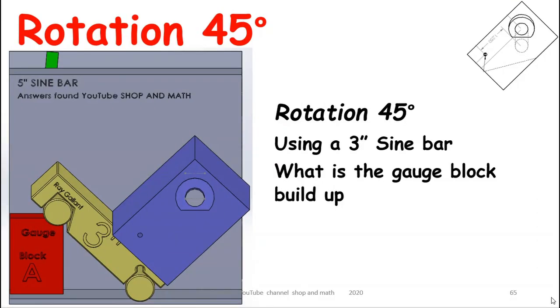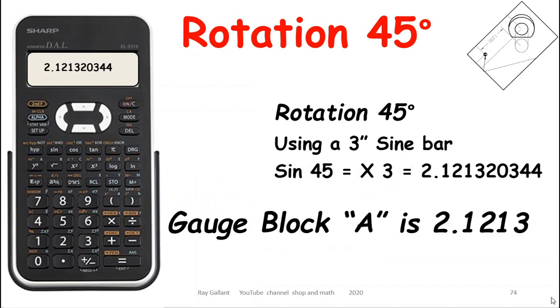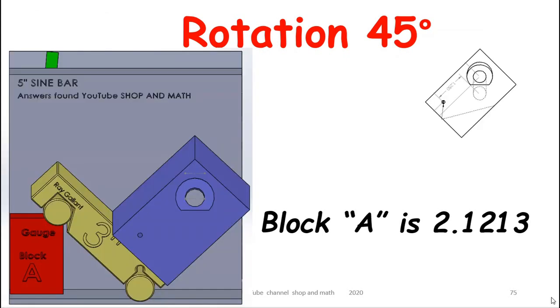Okay, now we need to calculate our gauge block height. So sine 45 times 3 is 2.1213. So our A gauge block is calculated. Now we need to calculate our tilt.